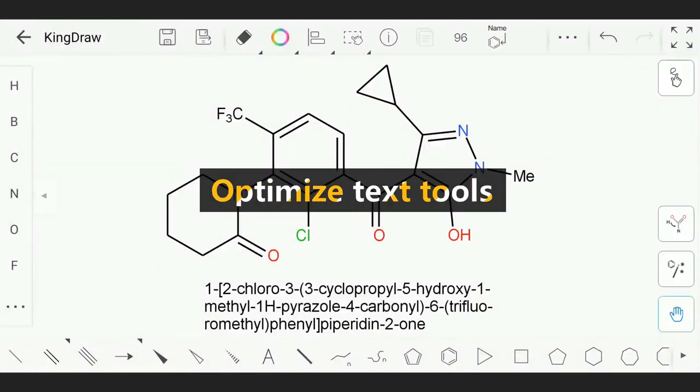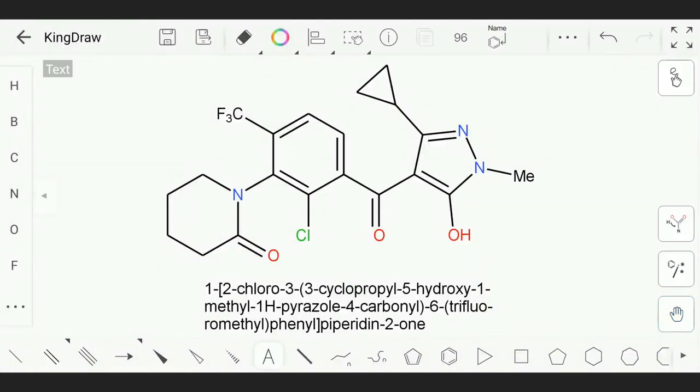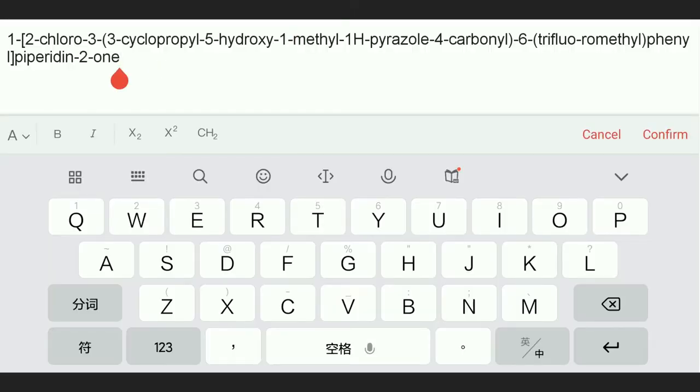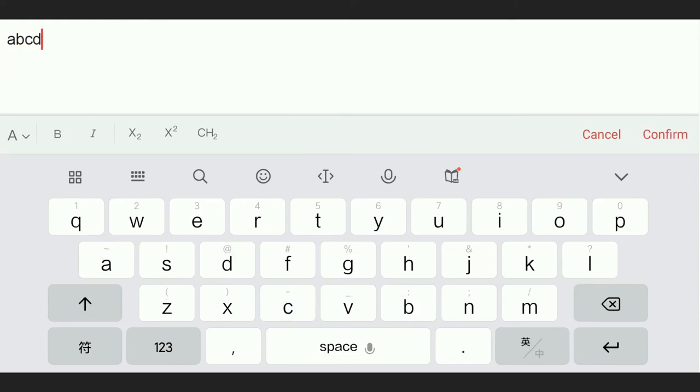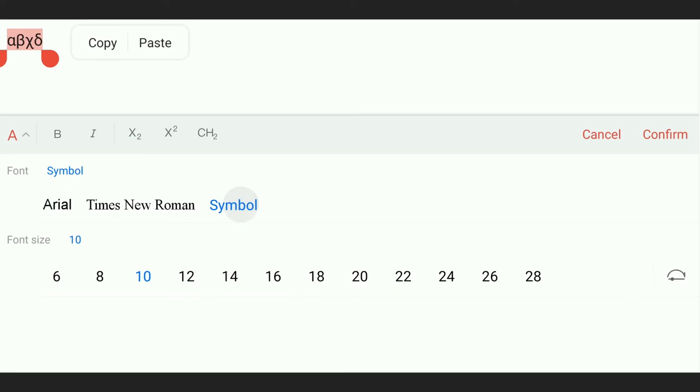Highlight 5. Optimize text tools. In the text box, press and hold the text, and the copy and paste button will pop up to facilitate related operations. Besides, we have fixed the display problem of simple font.